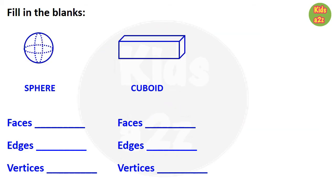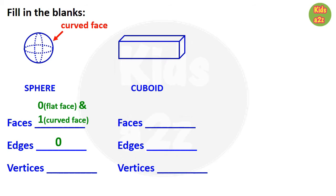For sphere: it has one curved face and there is no flat face of a sphere, so beside faces, kids need to write zero flat faces and one curved face. Beside edges, kids need to write zero, and vertices is also zero. Now for cuboid, it is similar to cube — that means it has six faces, twelve edges, and eight vertices.